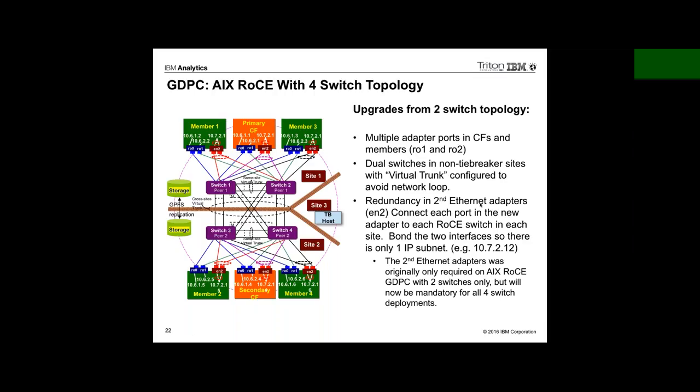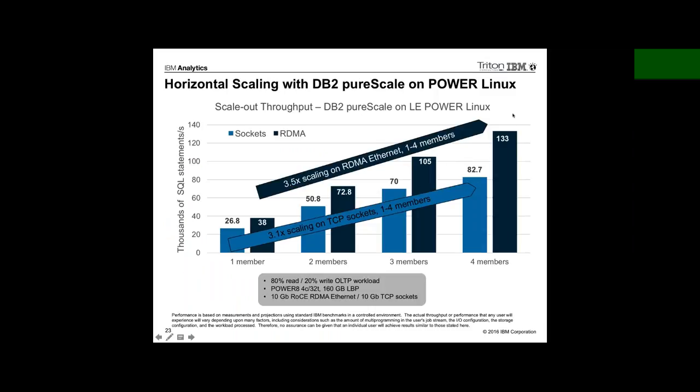The bottom line is how much you want to pay and how many nines of availability you need. The cost comes not so much from the CPUs but from switches, cabling, and dark fiber between sites. For most customers, a local PureScale cluster with HADR to a remote cluster is probably the scenario worth considering. One example is a tax authority running PureScale for continuous local availability, with an HADR cluster for disaster recovery accepting a 30-second downtime — which is acceptable to them.